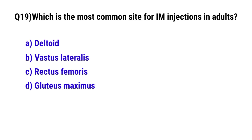Question number 19: Which is the most common site for intramuscular injection in adults? The correct option is D: gluteus maximus.